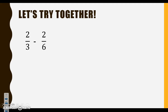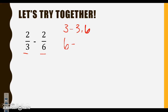Let's look at subtracting fractions with unlike denominators. We're going to start out the exact same way — we need to figure out a multiple that these two numbers share, so we're going to list our multiples. I'm going to start with 3: 3, 6, 9, 12, 15.